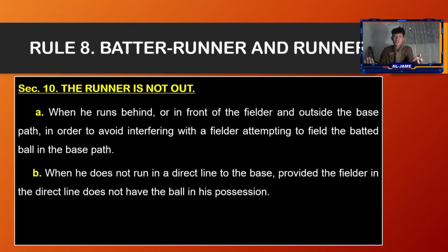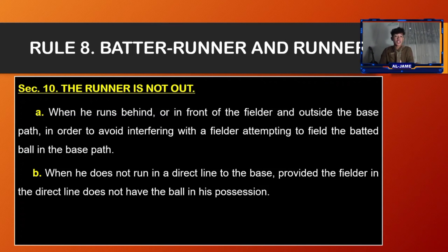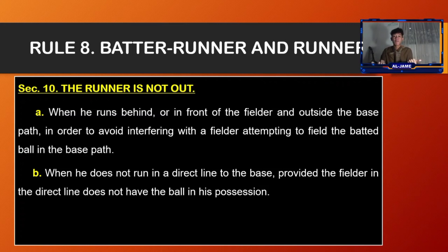Section ten, the runner is not out when he runs behind or in front of the fielder and outside the base path in order to avoid interference with a fielder attempting to field a batted ball in the base path.